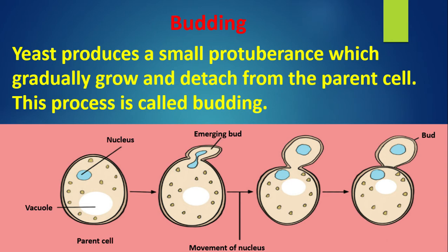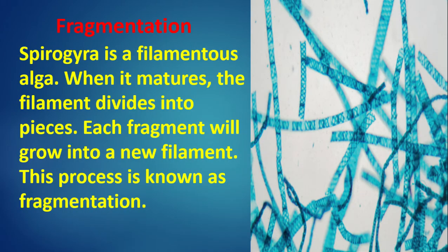Budding: Yeast produces a small protuberance which gradually grows and detaches from the parent cell; this process is called budding. The parent cell contains vacuoles and nucleus. The vacuole elongates, the bud emerges, the nucleus moves into it, and the bud separates from the parent cell and grows into a new cell. Fragmentation: Spirogyra is a filamentous algae; when it matures, the filaments divide into fragments, and each fragment grows into a new filament.